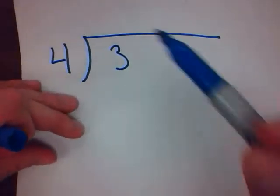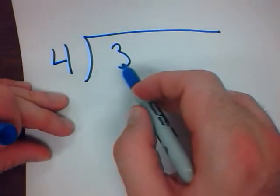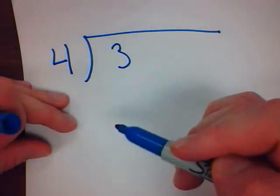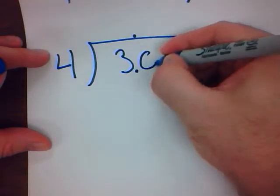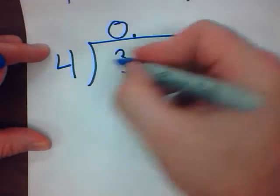Now let's continue the question. 4 goes into 3, not at all. I'm done, right? No, I'm not. There's a decimal here and there's a decimal here. And I'm going to put a 0 in. And that's 0 because it doesn't go in.